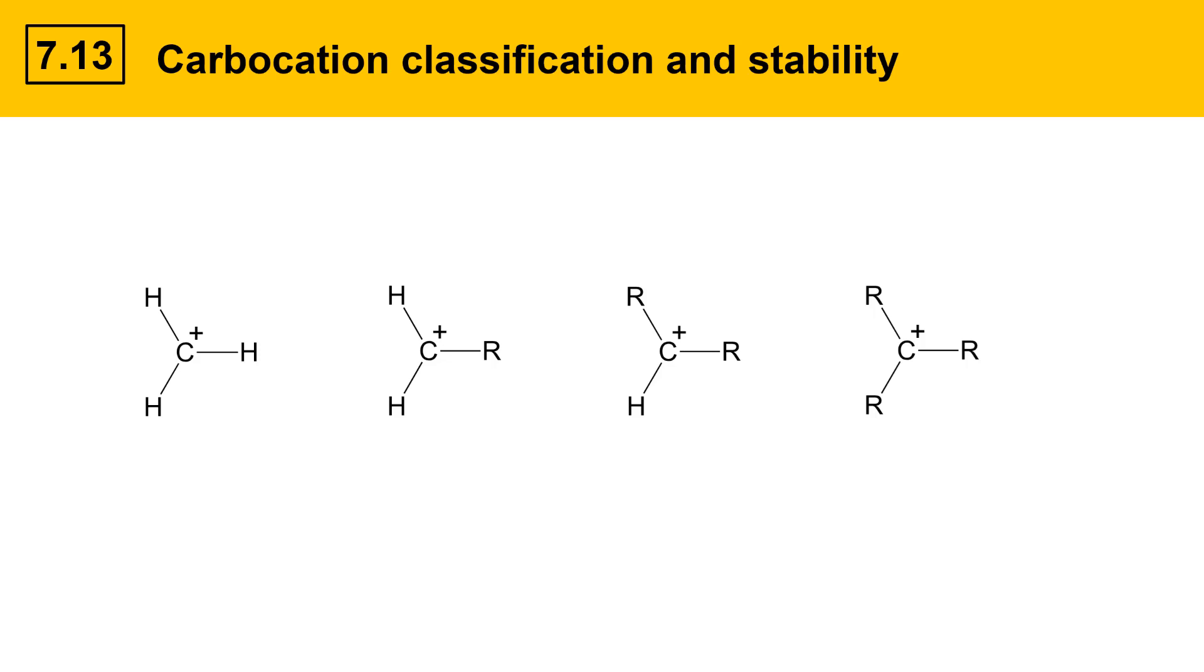Carbocations are classified according to their substitution and that also impacts their stability. Here's a list of four different kinds of carbocations with different substitution states. The first type of carbocation is the methyl carbocation. It's characterized by having no r groups attached, only hydrogens. Adding one r group to the carbocation makes it a primary carbocation.